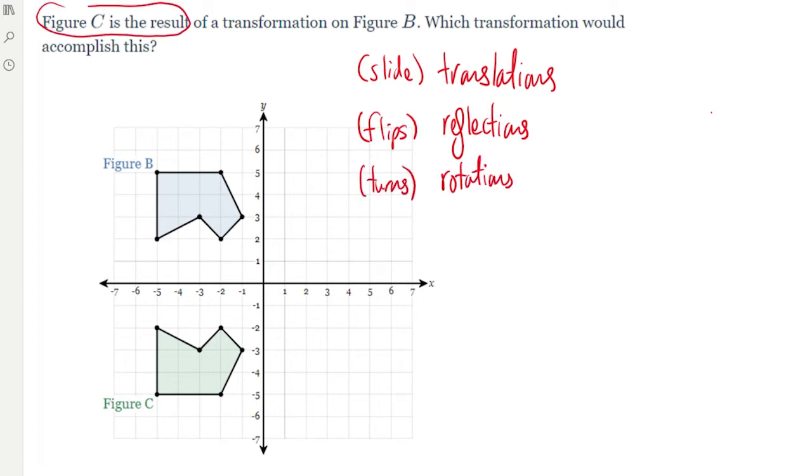Figure C is the result of a transformation on figure B. So that means figure B is the original one. I'm just going to put a star on the original. You can tell it's a flip, right? And what line did it get flipped over? It got flipped over this one.